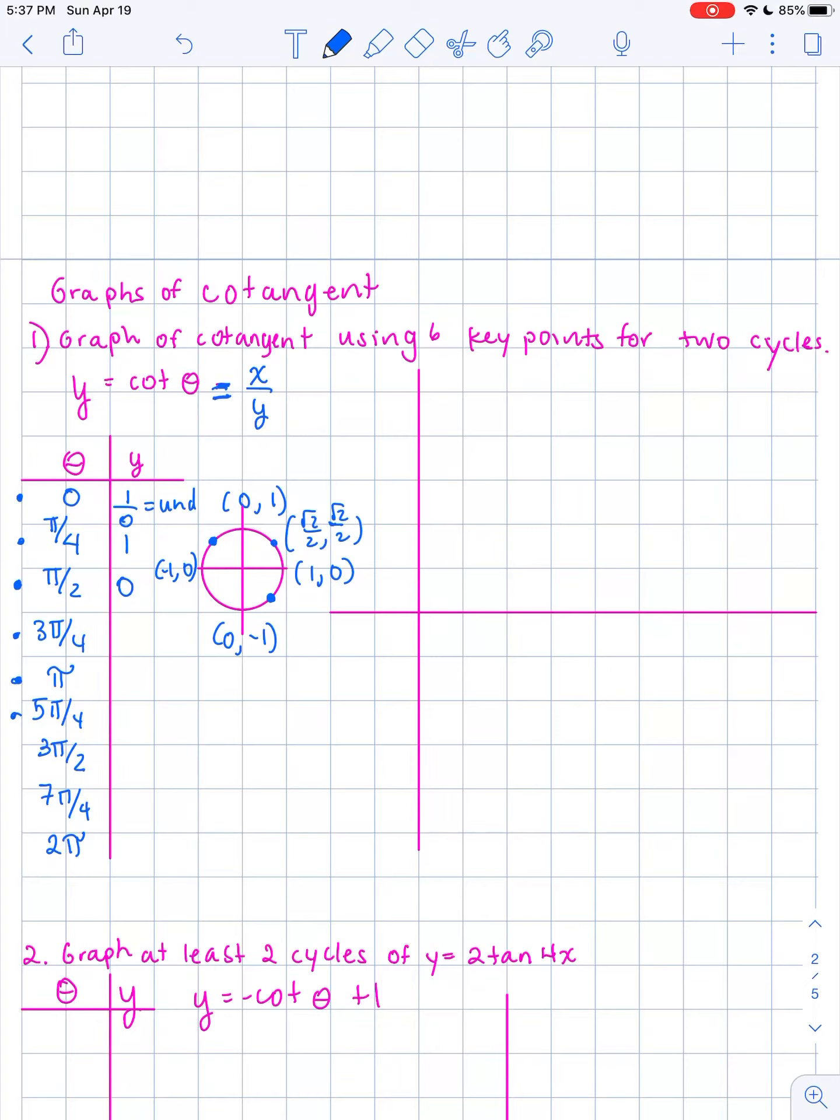At 3π over 4, we get that now we're in the second quadrant where tangent and cotangent is negative. At π, we get it's undefined again, because we have 0 being at the bottom. And then 5π over 4, we're in the third quadrant where tangent and cotangent are positive. So positive 1. 3π over 2, we get 0. 7π over 4, negative 1. And then at 2π, undefined.